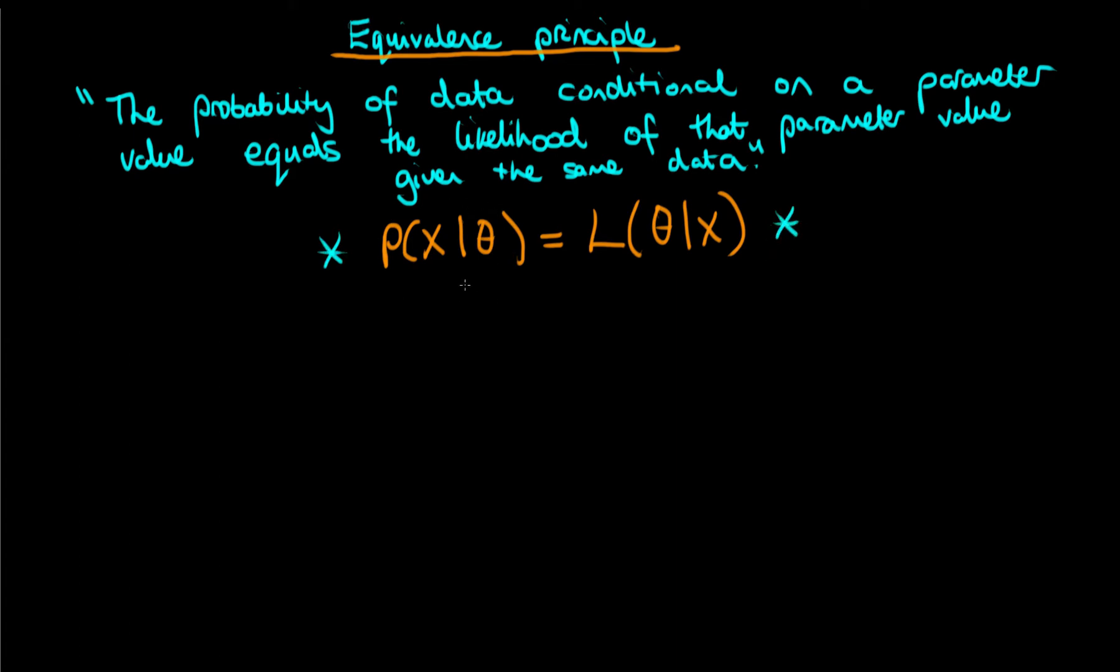Because if we know what the probability distribution is then we can always work out what the likelihood is and vice versa. In fact these are just two sides of the same coin really but under slightly different conditions.